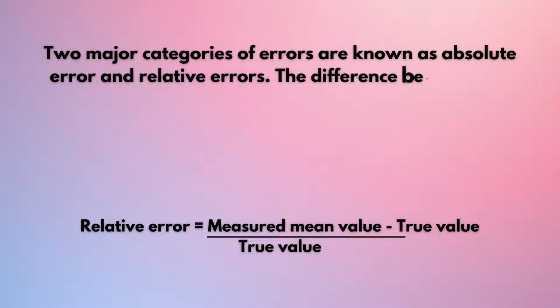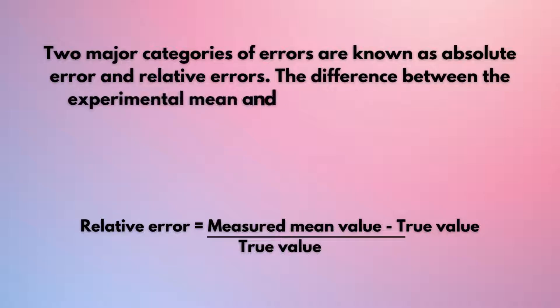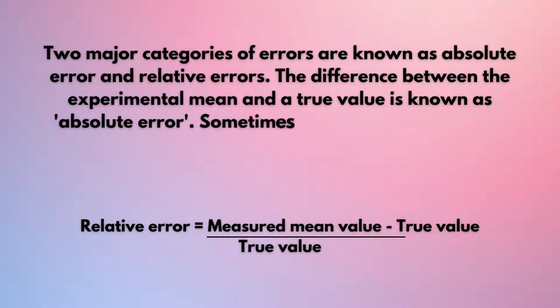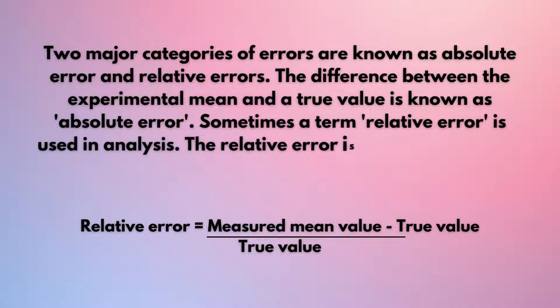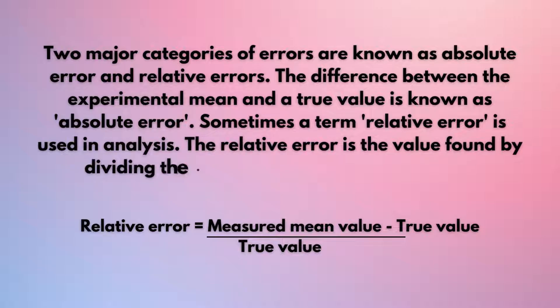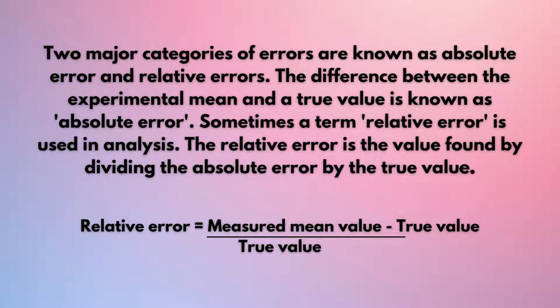We will consider the difference between the true value and the observed value. The true value is the standard value. For example, paracetamol is 500 mg — that is the standard value. But if you do an analysis and observe 490 mg, then 490 is the observed value.